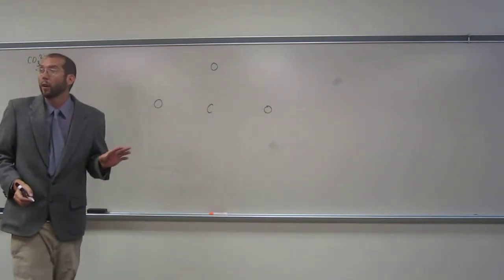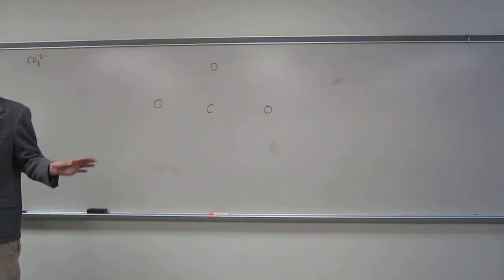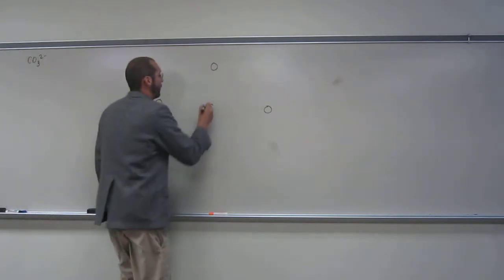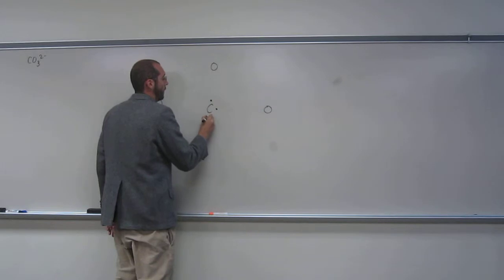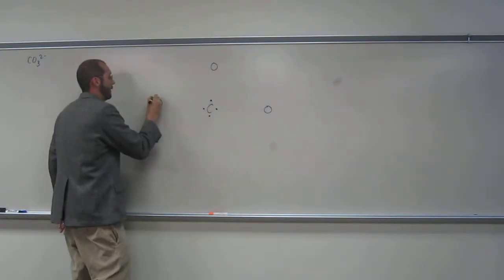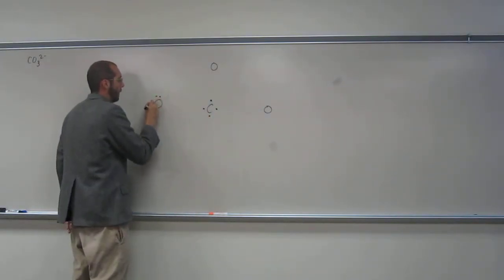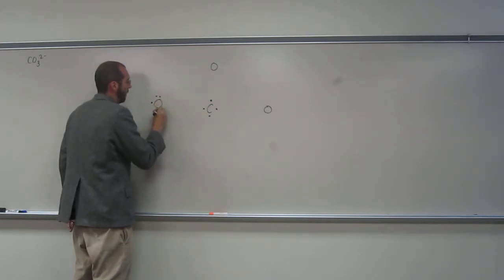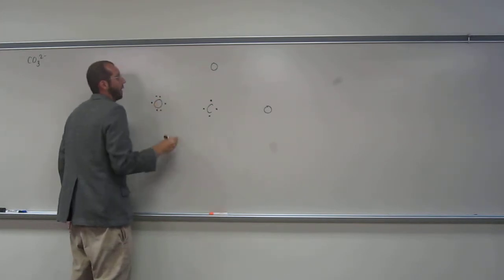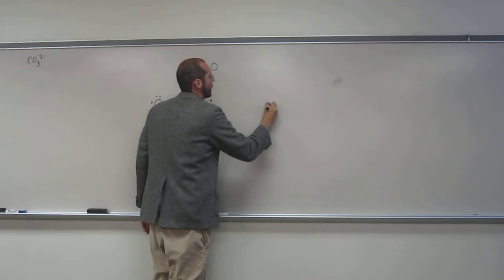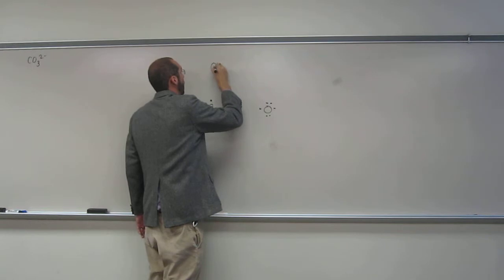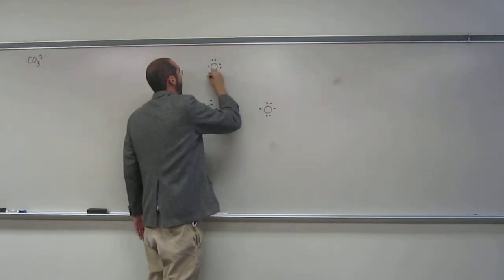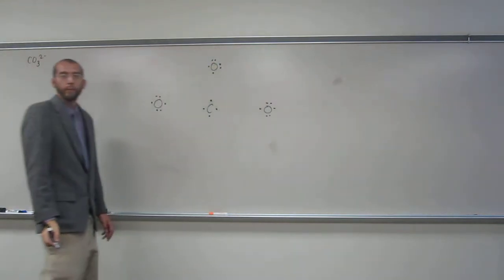So now, what I want you to do is draw your Lewis structures of all of those elements. So carbon's got how many electrons? Four. And oxygen? Six. Six. Six. So six. Like that, okay?